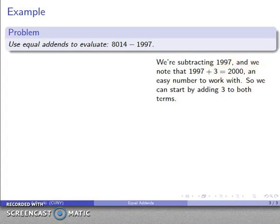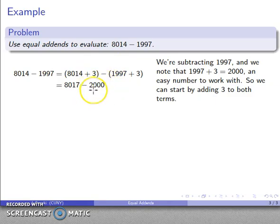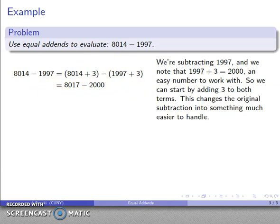And so what that suggests is I can add three to both terms. I could lengthen both tapes by three. So this 8,014 minus 1,997, I'll add three to both the minuend and the subtrahend. And so now I have the new subtraction, 8,017 minus 2,000. This is far easier to compute. That's going to be 6,017.